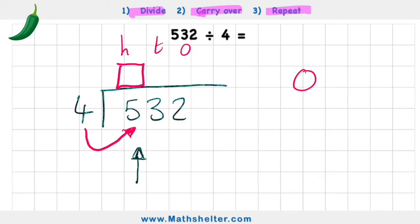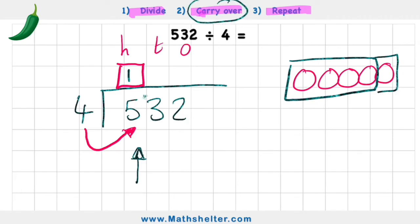So if I have five circles, how many groups of four do I have? Well I have one full group. So I'm going to put my one up here to show one full group, but I have this one left over, I can't just ignore that. So I'm going to carry over that to the next column, turning my three into a 13.